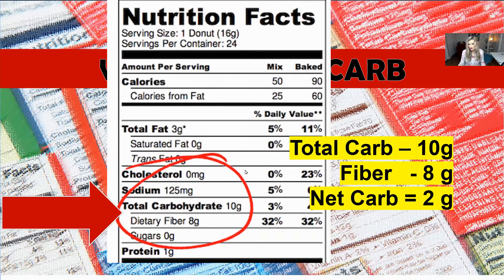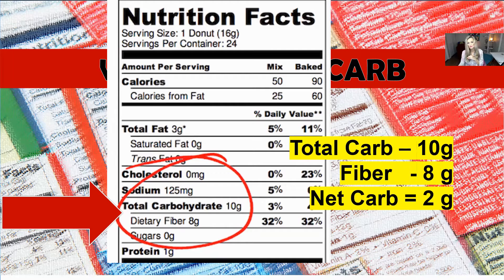Even though it might be 2 net grams, there's no nutritional value, and it still has 10 grams of carbs and it's not healthy for you. The difference between a product like this versus a vegetable is that there's simply no nutrition in it, and that plays a huge role when you're trying to decide whether you want to count carbs or whether you want to eat better foods.